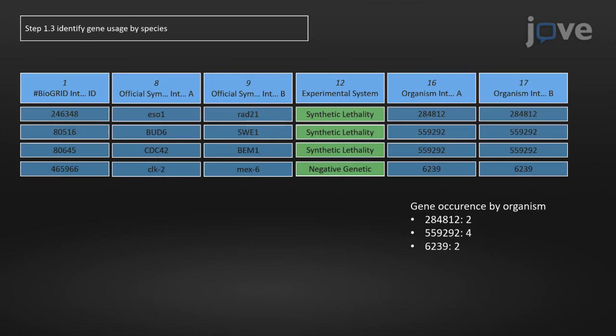Identify the species for which synthetic lethal interactions were reported by determining the number of synthetic lethal interaction partner tax IDs, which will provide an estimate on the number of these interactions available per organism.